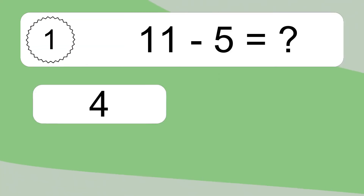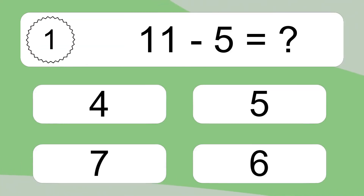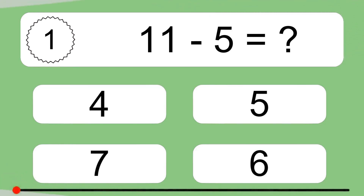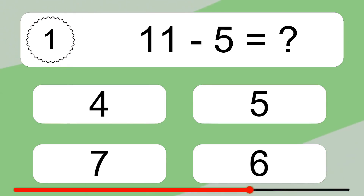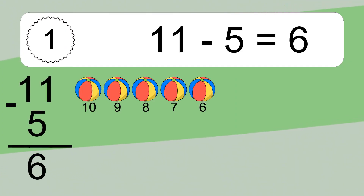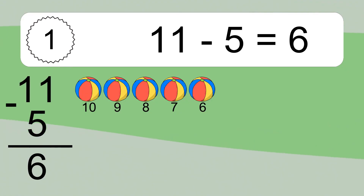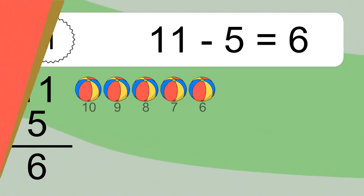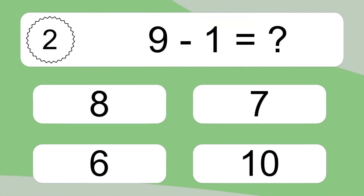11 minus 5 equals what? 11 minus 5 equals 6. Let's count it: 10, 9, 8, 7, 6.